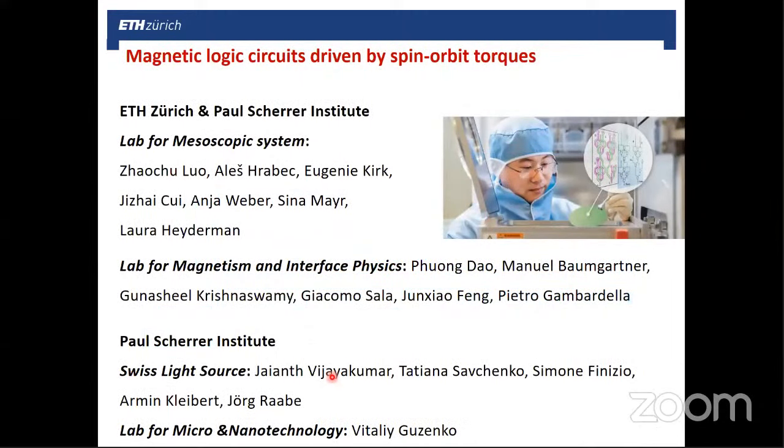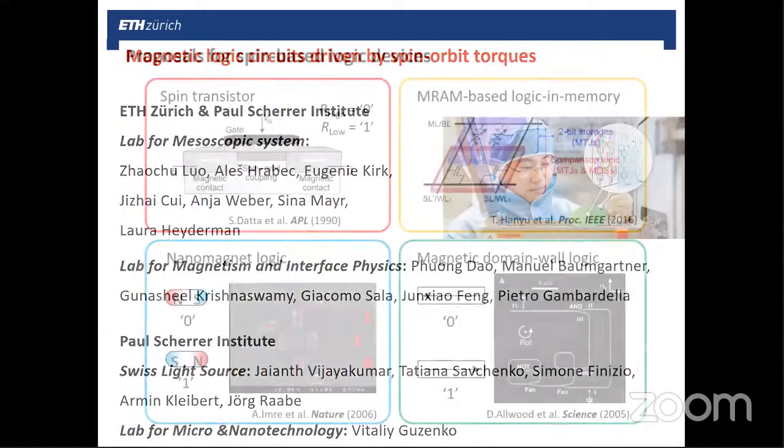So we discussed magnetic tunnel junctions for MRAMs, for memories. But there is not only memory where spintronics can play a role, but also logic. In particular, combining logic with memory is very interesting to eliminate one of the major bottlenecks in nowadays computing, which is the separation between memory and logic functions. This work is the result of a collaboration with the group of Laura Heyderman. I mentioned at the beginning Zhaochu Luo, whom you see here in this picture making one of his devices, Alice Hrabec, and the people in my group here, as well as other people at Paul Scherrer Institute and Swiss Life Sciences.